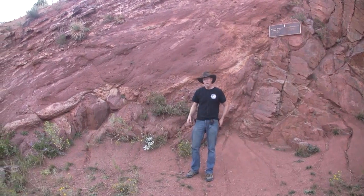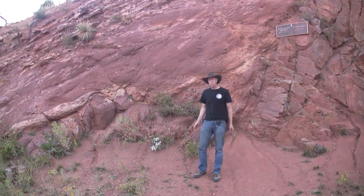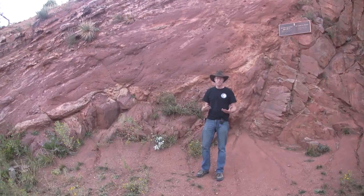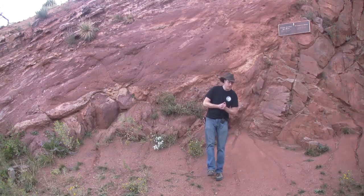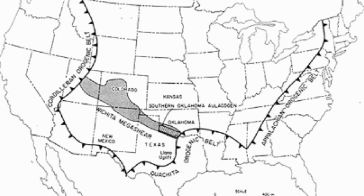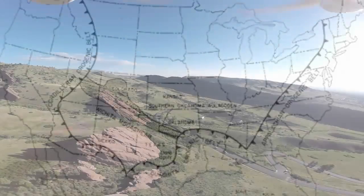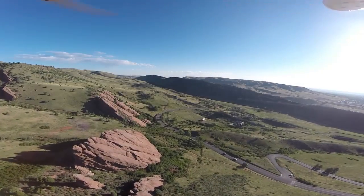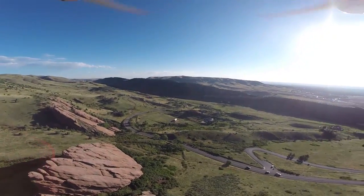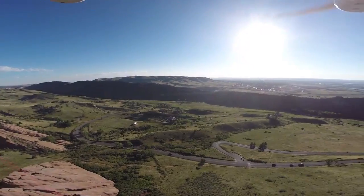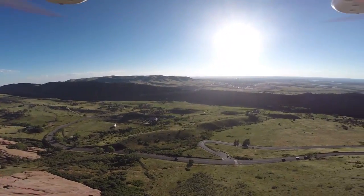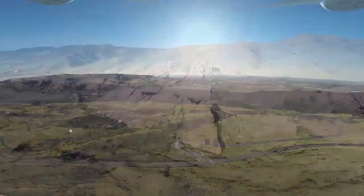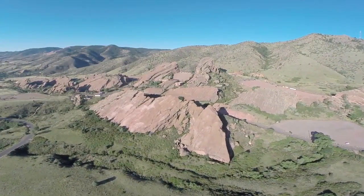The ancestral Rockies were as large and as extensive a set of mountains as the Rockies we see before us today, extending from the Grand Canyon area of Arizona all the way up into the Dakotas. In our immediate location, we can infer from the fining of grain size to the east under Denver that these ancestral Rockies were close to our west, just as the modern Rockies are today.